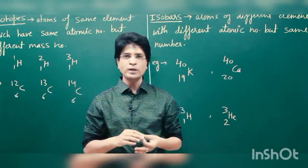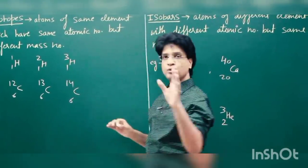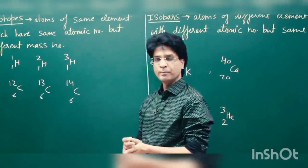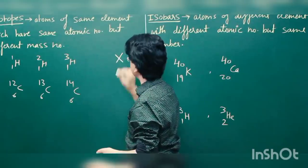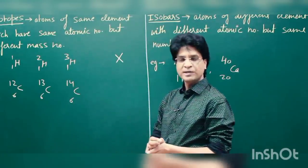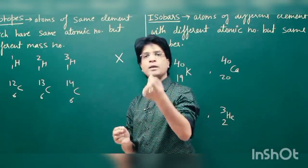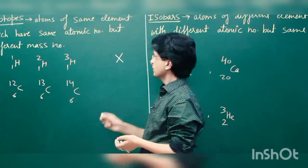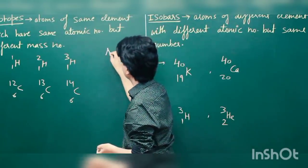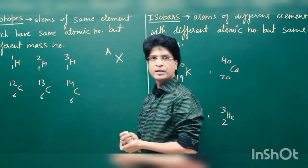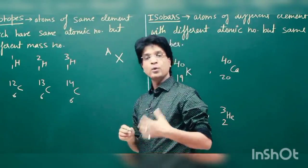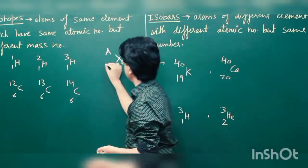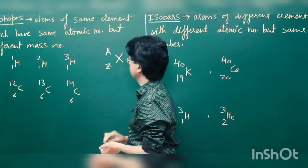Before we move forward, let me introduce a small concept you already know: mass number and atomic number. For any element X, the mass number is the total number of neutrons plus protons found inside the nucleus, written at the top. The atomic number is the total number of protons present in the nucleus, written at the bottom.